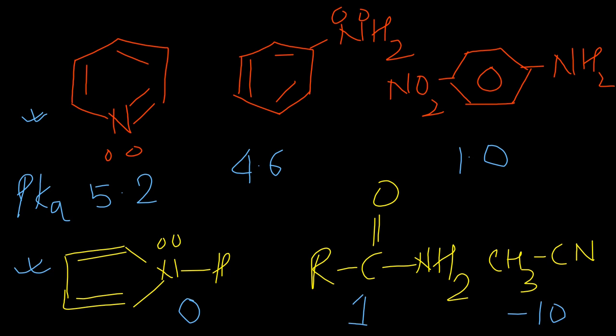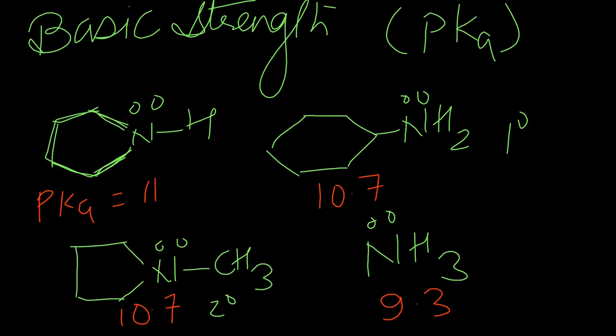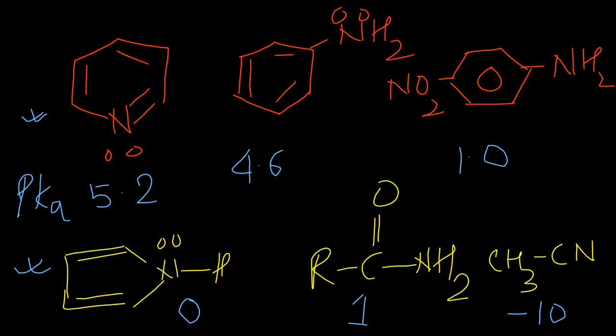Aniline's basic strength is less. Pyridine is quite a good base - we use it as a weak base. Then comes ammonia. Please make a note of this important concept. This order you have to be careful about.